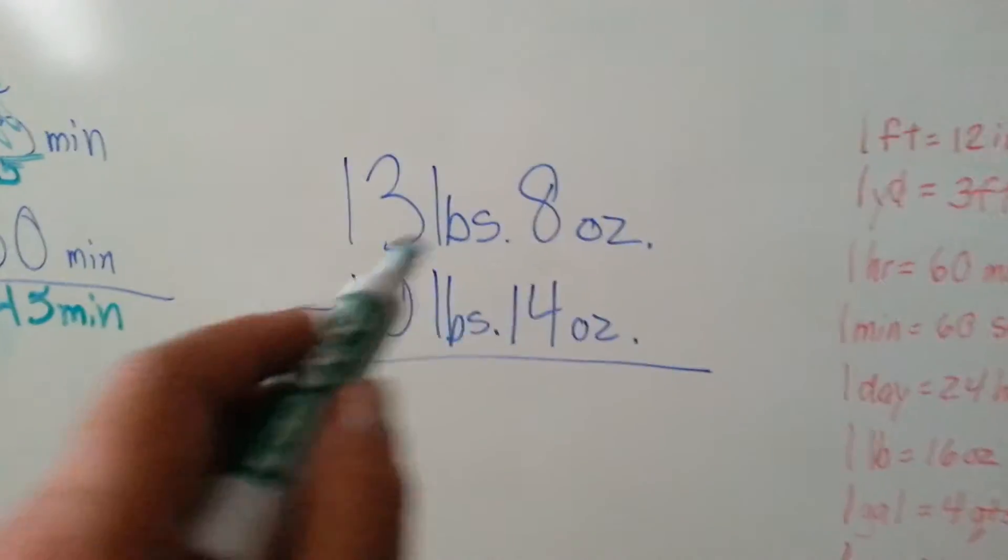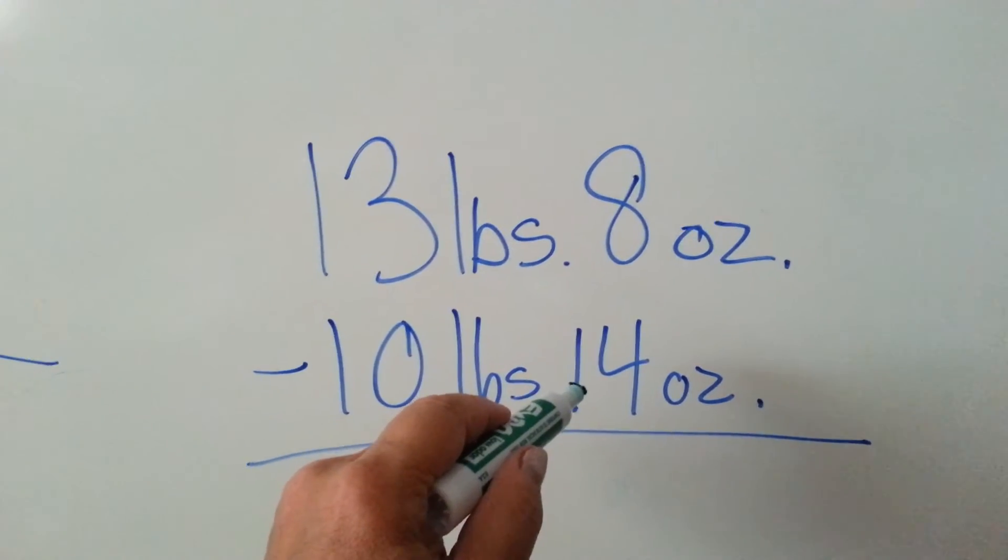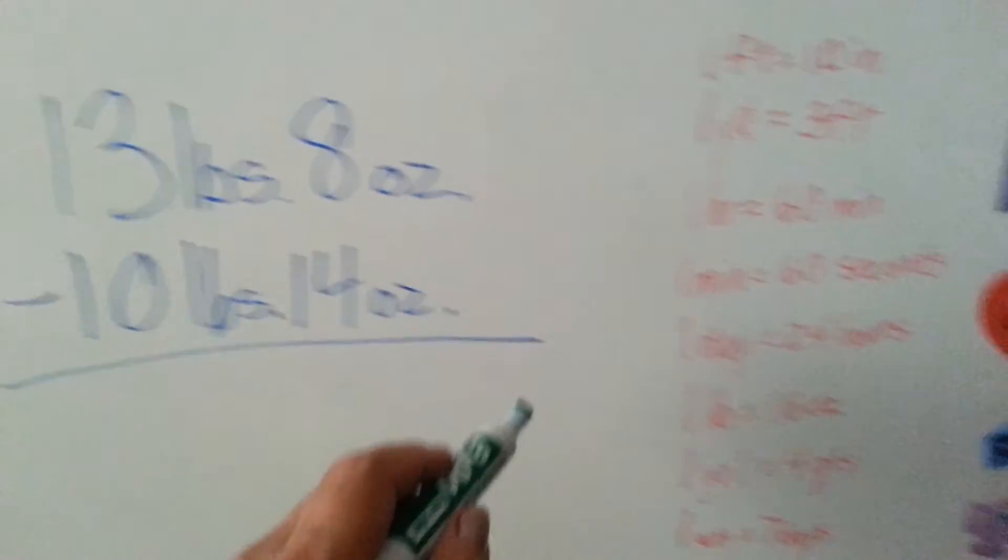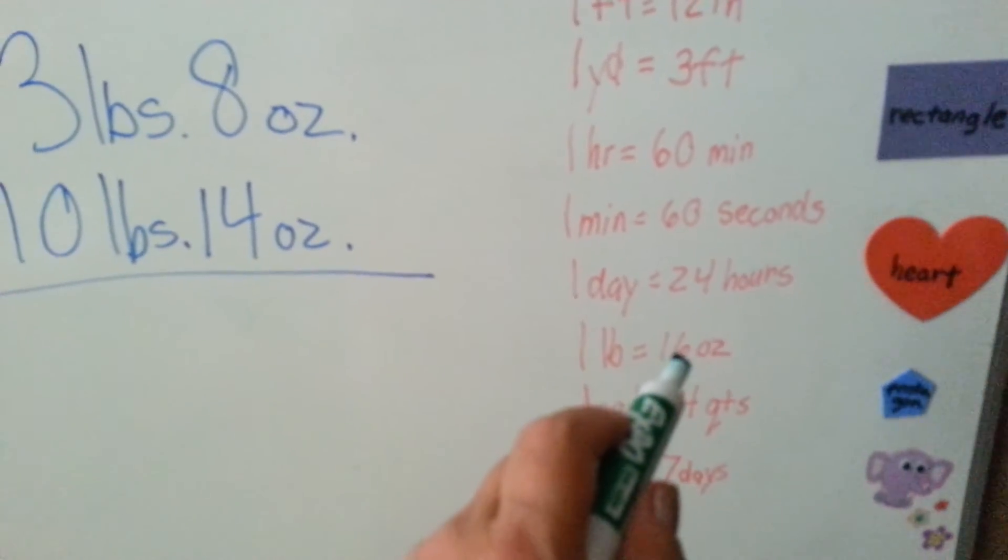Now let's do these pounds and ounces. Can you have 8 ounces and take 14 away? No, you can't. So let's look at our chart. One pound is 16 ounces.